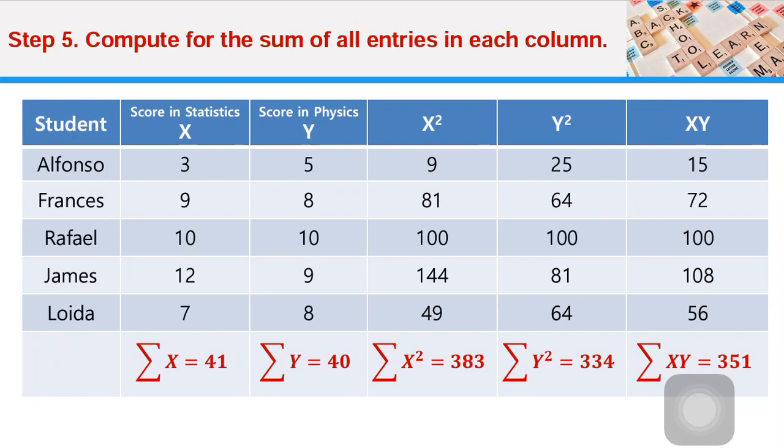The summation of X squared is 383. The summation of Y squared is 334. The summation of XY is 351. You can pause the video as you are going to counter-check whether the entries and their summation are correct.